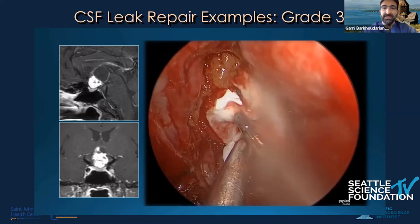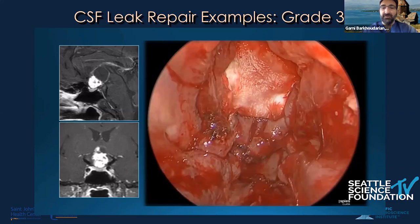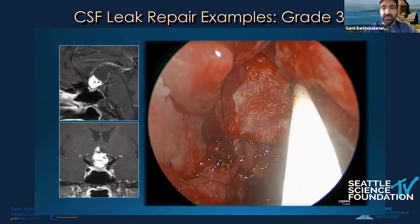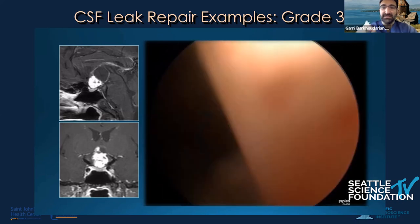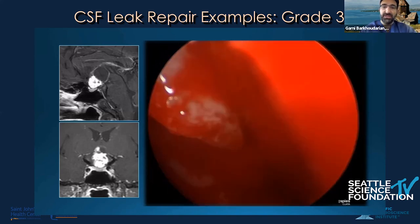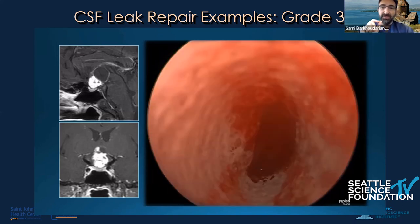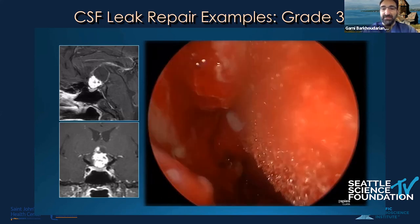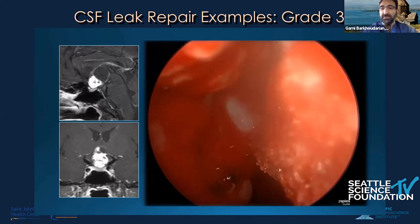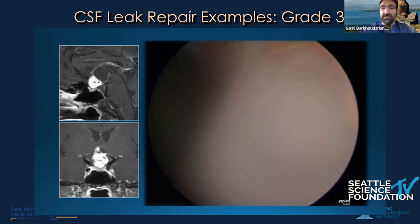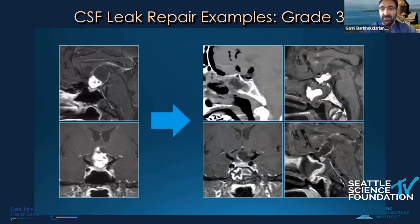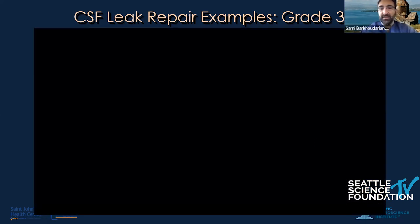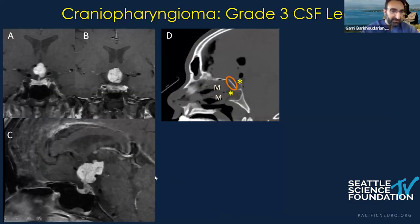We add a bit more fat to allow the Merocel packing to sit nicely. We place another layer of collagen sponge in case the packing sticks to it. We put the scope through the Merocel packing so we know exactly where it's going and direct the pressure from the packing directly to the collagen sponge or flap that we need to compress. We often use two packs in the reconstruction.